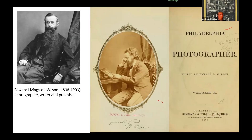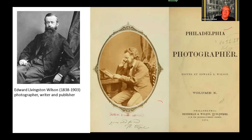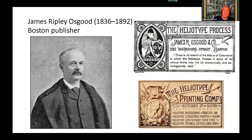The photographic press is another rich source of information on photographic print processes. Edward Wilson, a photographer and writer, published the influential Philadelphia Photographer, one hallmark of which was that different processes were used to illustrate. In this example, it's a portrait of Hermann Vogel, the great German photochemist. James Osgood was an innovatory publisher who adopted the heliotype process — a colotype process — during the 1870s, publishing more than 80 books, most of them of graphic art, specifically engravings.